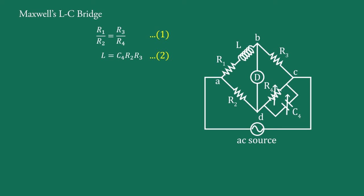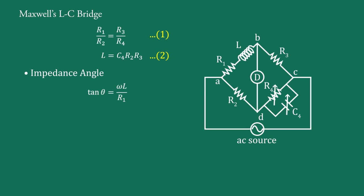Now we will find the parameters of the bridge. In this arm of the bridge, inductance L and resistance R1 are in series. Using the general formula for an RL series connection, we write for our bridge: tan θ equals ωL upon R1. Substituting the values of L and R1 from equations 1 and 2, we get tan θ equals ω·C4·R2·R3 upon (R2·R3/R4). After simplification, tan θ equals ω·C4·R4.